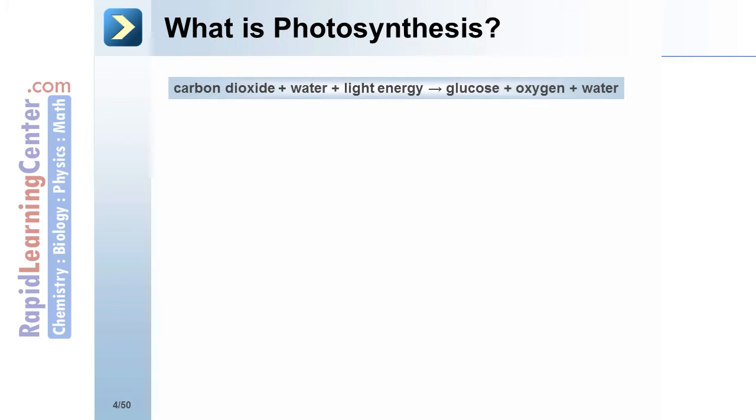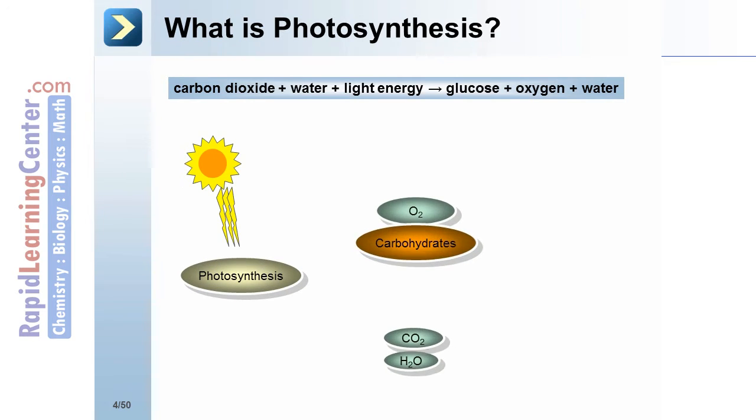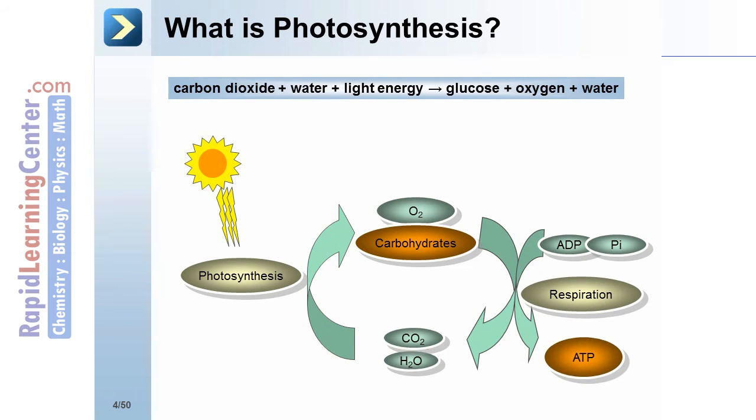What is photosynthesis? Carbon dioxide plus water plus light energy gives glucose plus oxygen plus water. Carbon dioxide in water with photosynthesis results in carbohydrates and O2. ADP plus inorganic phosphate in respiration produces ATP in photosynthesis.